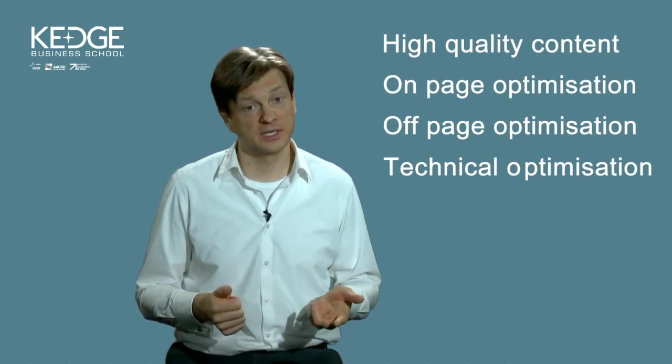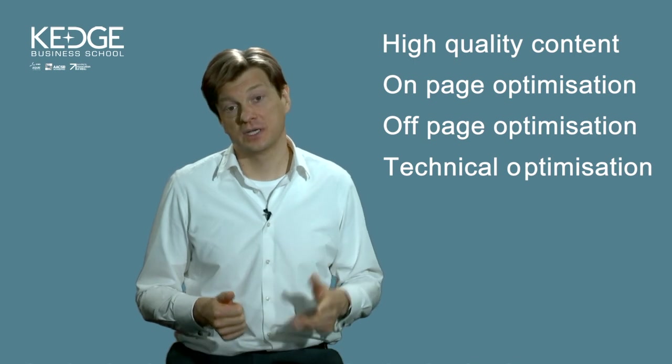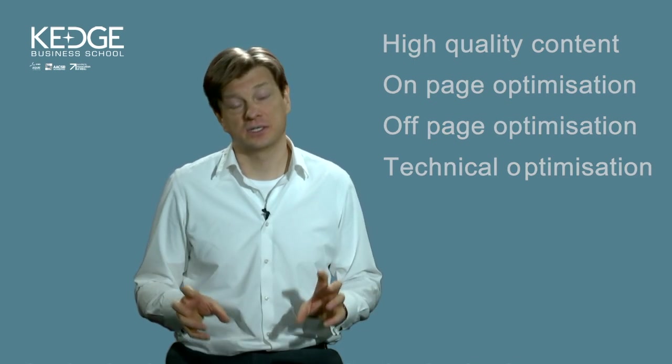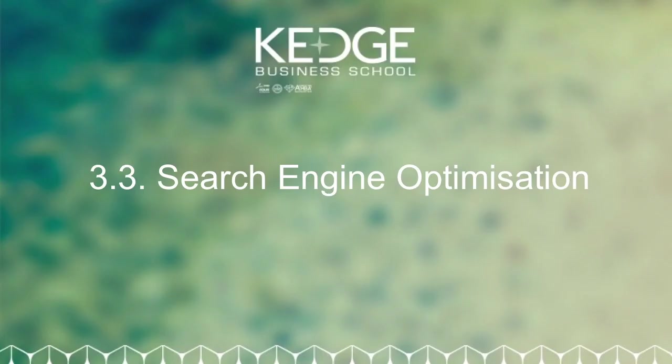So to wrap up, search engine optimization is a critical success factor for your personal branding online. There are four factors that we need to think about: high-quality content, on-page optimization, off-page optimization, and technical optimization. Try to think about the user and how they will be accessing this information and whether that information is accessible or not on the devices or where they will be in the physical place as well. We'll see you next time. Thank you.